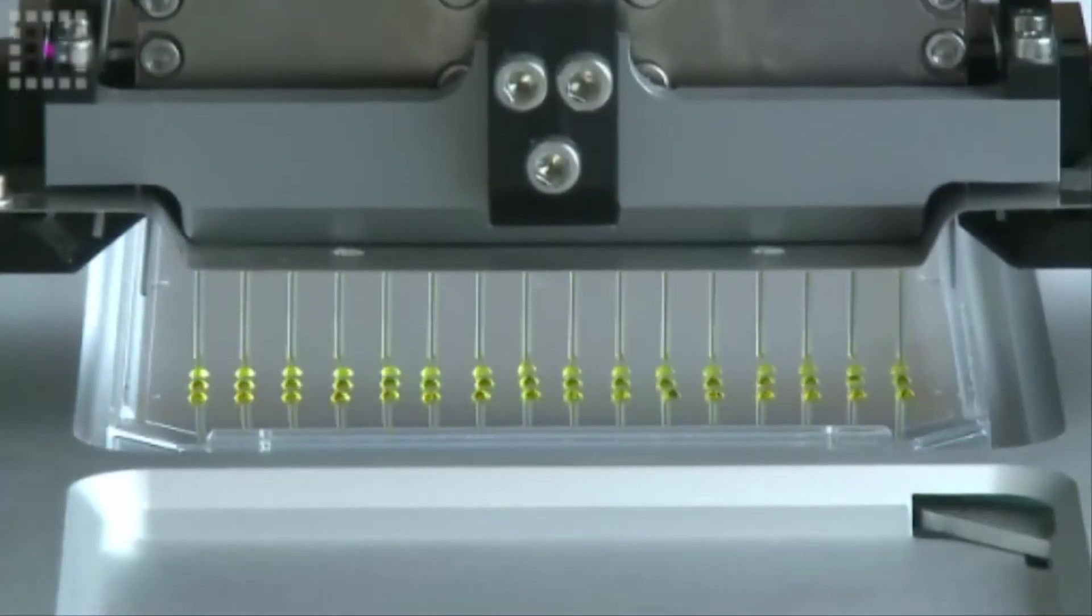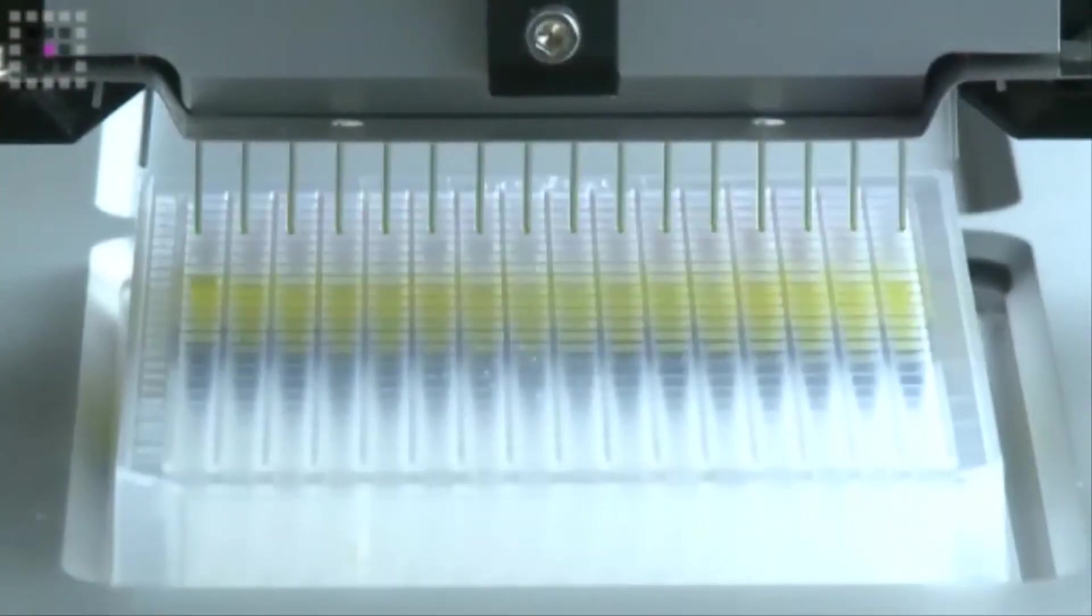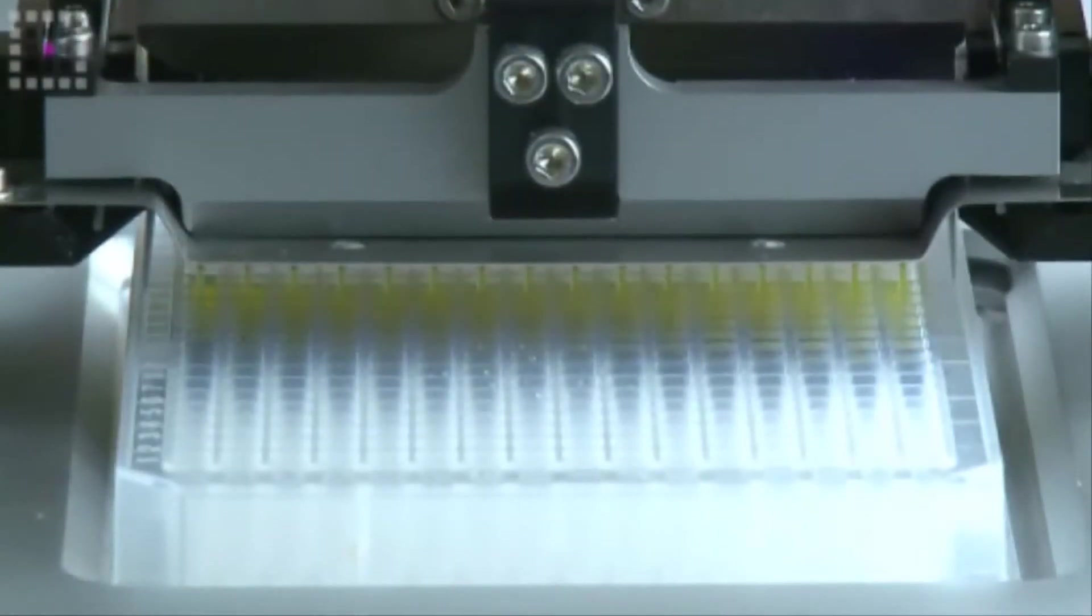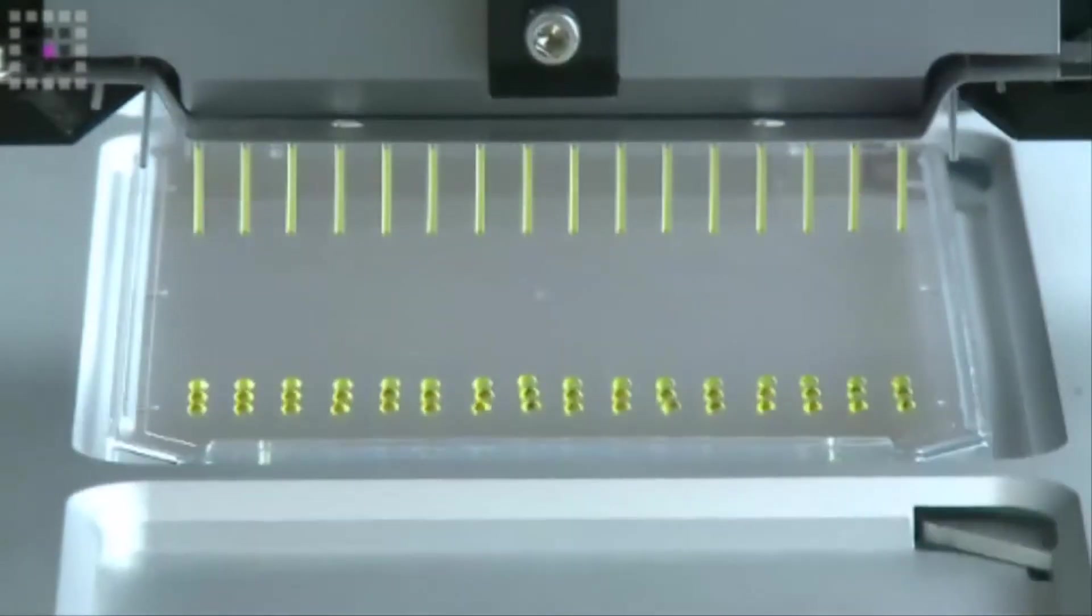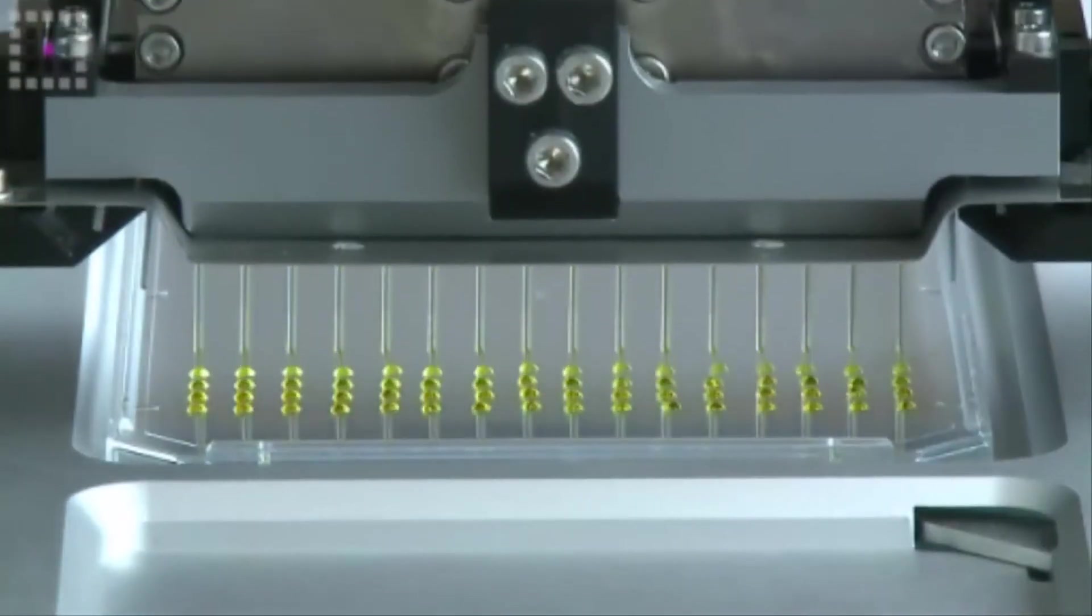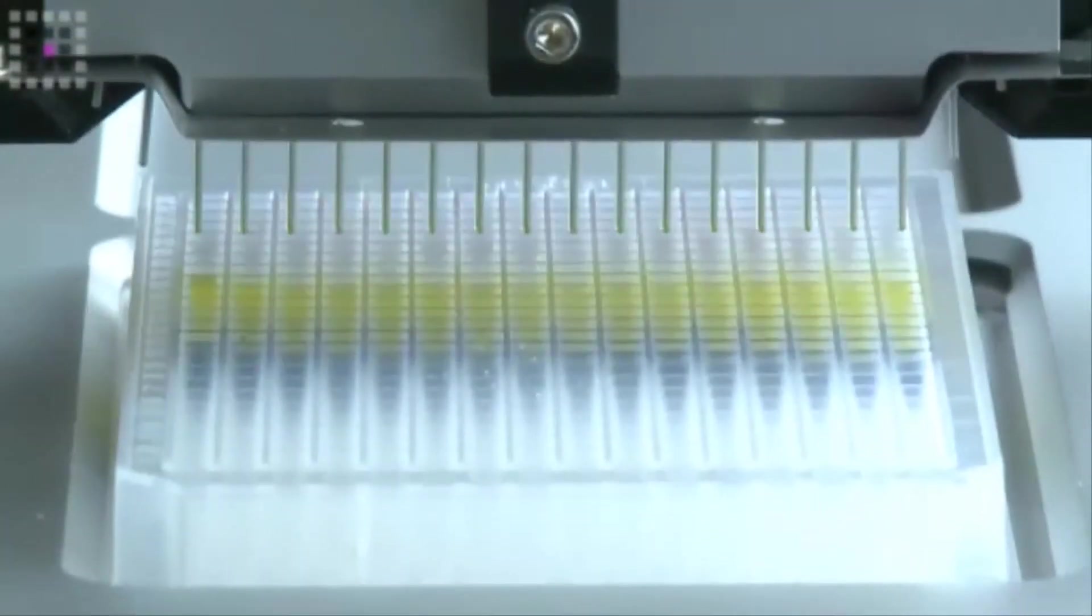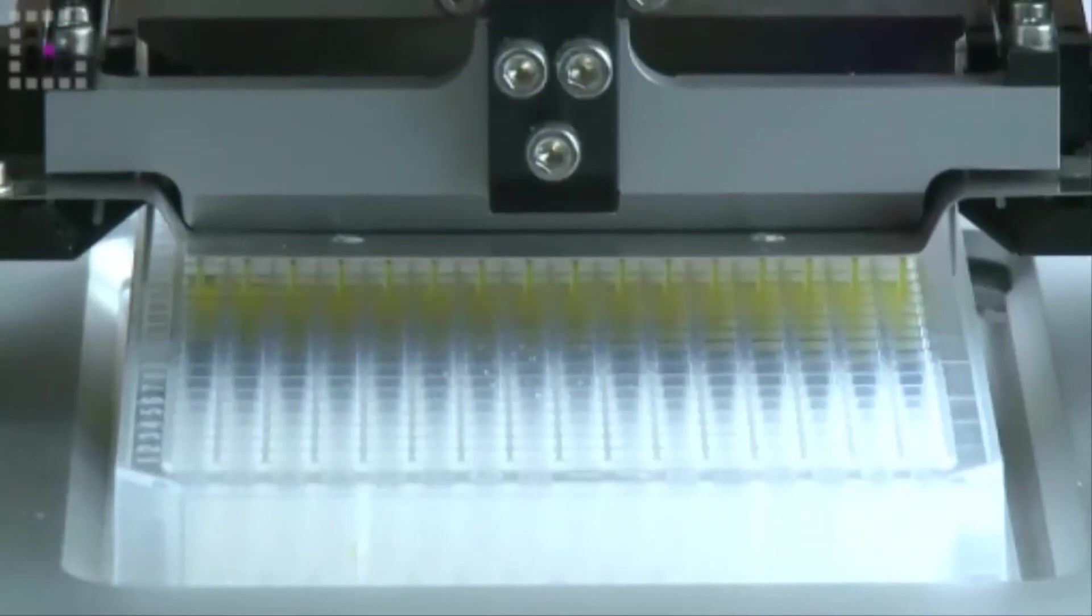The first step of the dilution protocol is to lay out the diluent as many points as we want in the dilution series. This is typically 8, 10, or 12 point dilution curves.